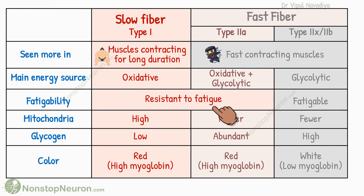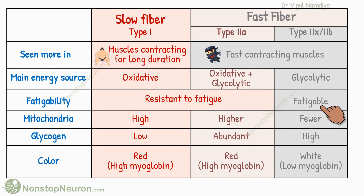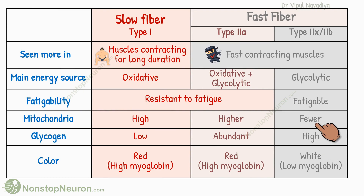Type 2A fibers are resistant to fatigue. They use oxidative metabolism as well as glycogen for energy, and have a higher number of mitochondria and abundant glycogen. Their high myoglobin content gives them a red appearance. Type 2B fibers are fatigable. They rely on the glycolytic pathway for energy, which can generate ATPs at a faster rate. So they have high glycogen content and fewer mitochondria. Lack of myoglobin makes these fibers white.